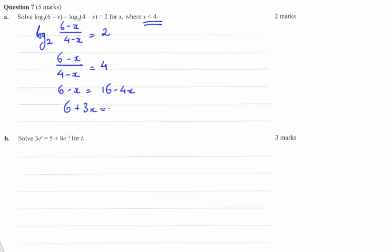6 plus 3x equals 16. Subtract 6 from both sides. 3x equals 10. Then x equals 10 on 3, which is less than 4. That's our answer.